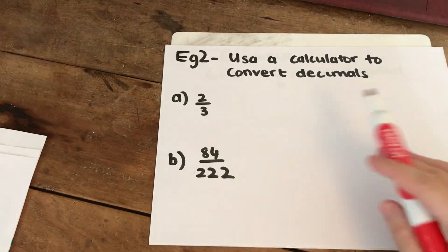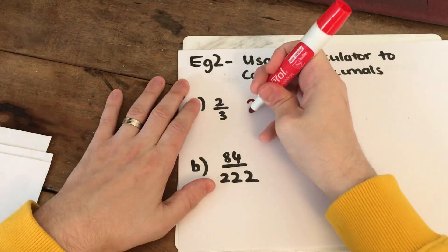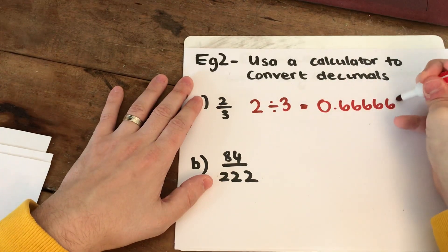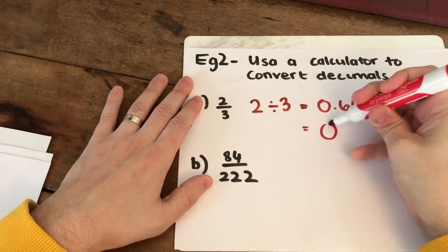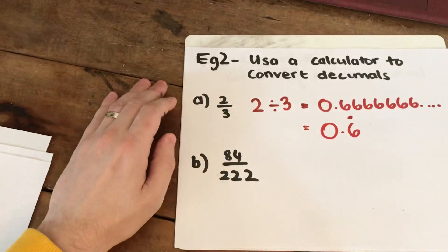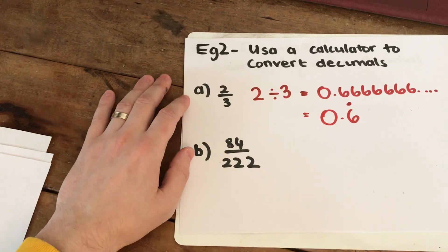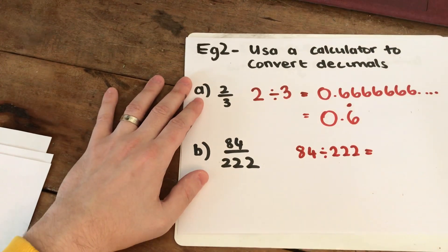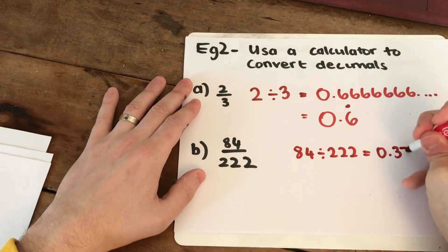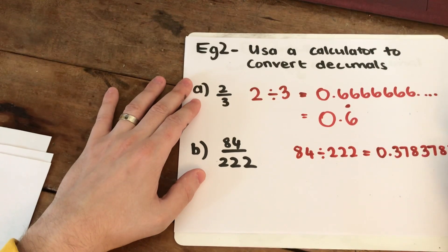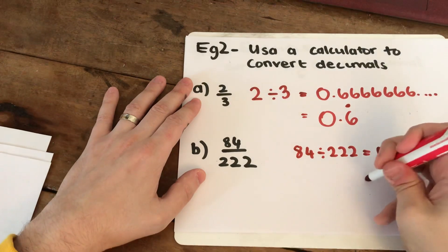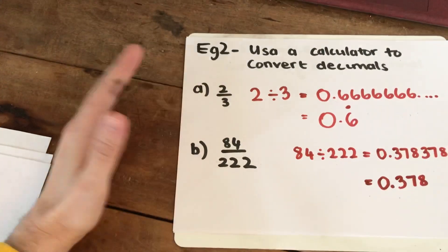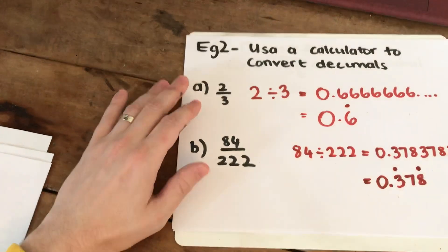The other type of question asks you to use your calculator to convert decimals. You do 2 divided by 3. When you put that into your calculator, your screen will show 0.66666 going on forever. This is a recurring decimal, so you put your recurring point over the 6 and it is 0.6 recurring. When you do 84 over 222, put 84 divided by 222 into your calculator. What comes out is 0.378378378378. To write this as a recurring decimal, you put 378 because they are your recurring decimals, and put the point over the first and last number.